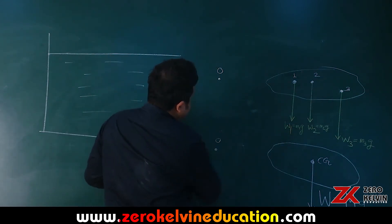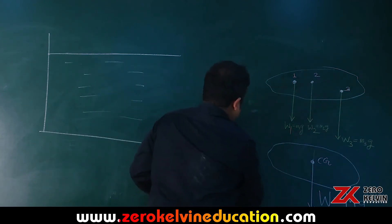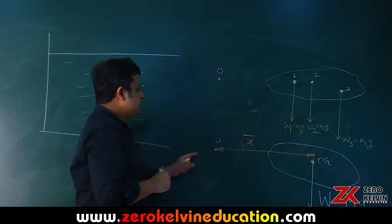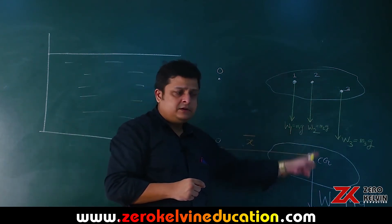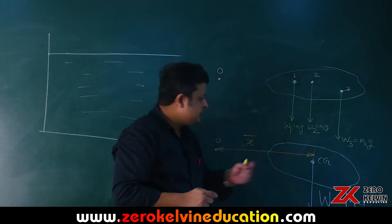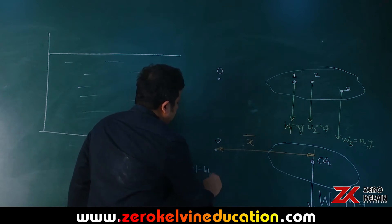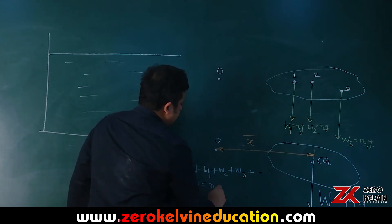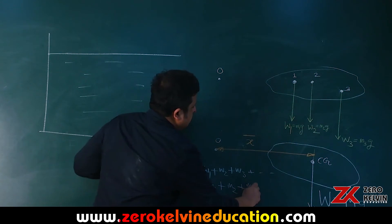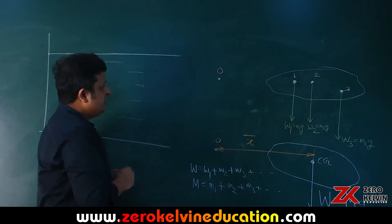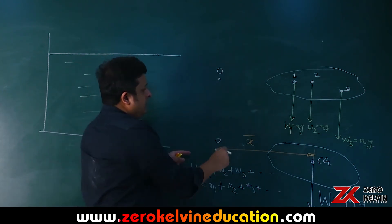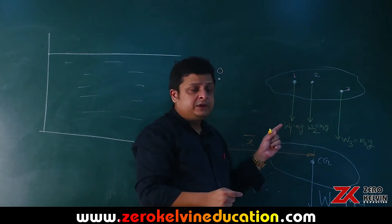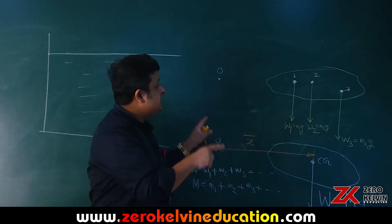This is point O, and x̄ is the distance of the line of action of the total weight from point O. So W is the total weight: W1 + W2 + W3 + ... = (m1 + m2 + m3 + ...) × g. We equate the torque — instead of having all these distributed forces, we have this single force which produces the same torque about O. That is the concept of the line of action, and it applies for a distributed force.